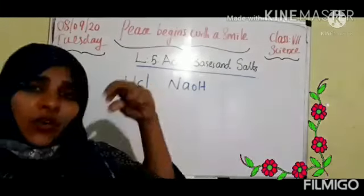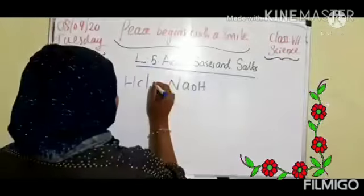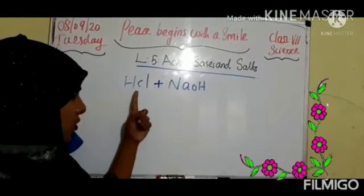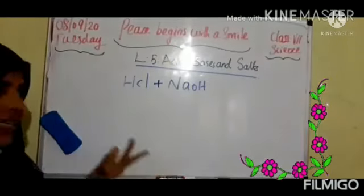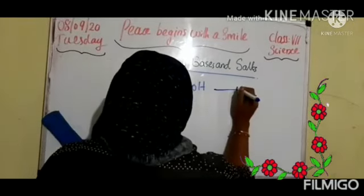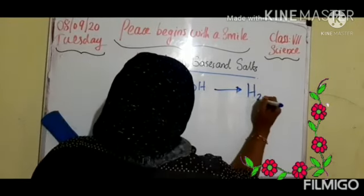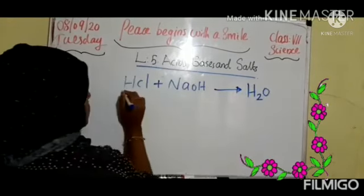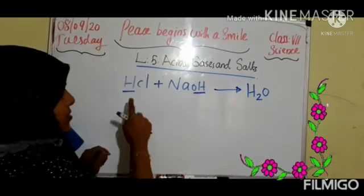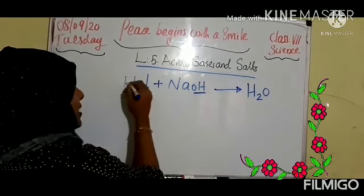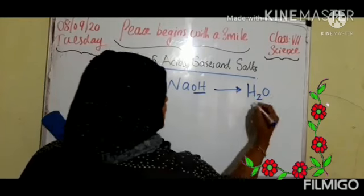What will happen if hydrochloric acid is mixed with sodium hydroxide? Which reaction will we get? In this reaction, we will get H₂O — water. This one H and here OH is there, so it will become H₂O. That is water.